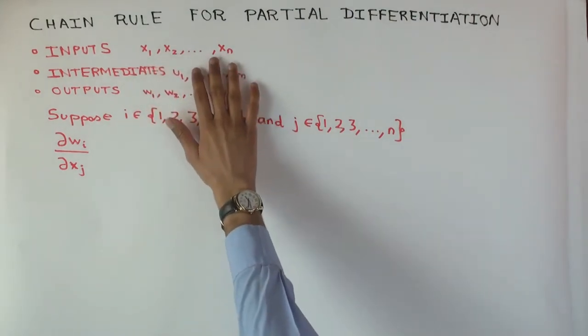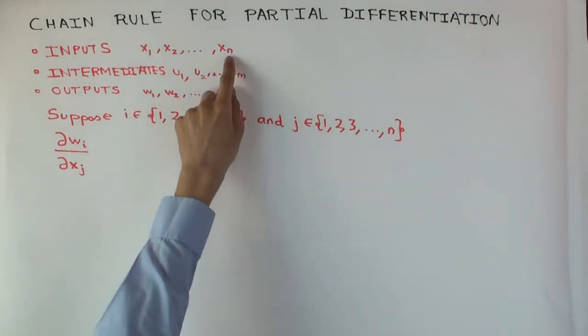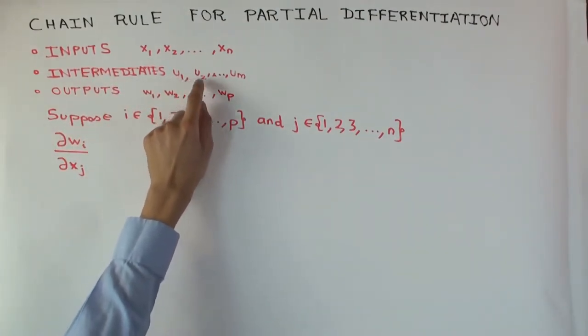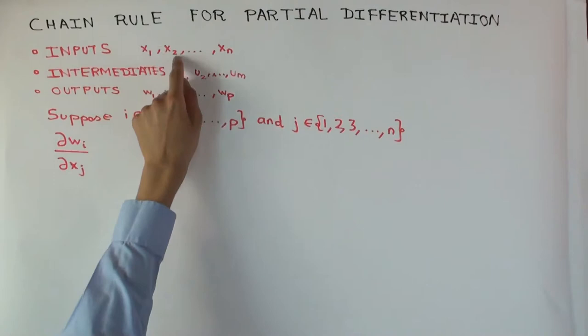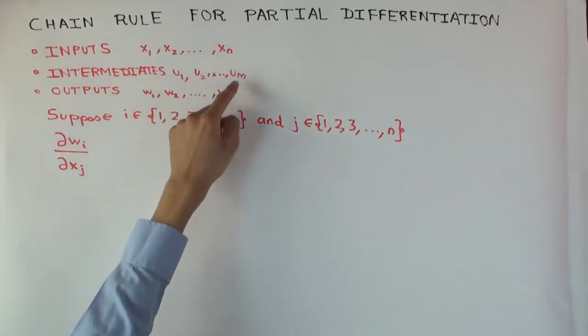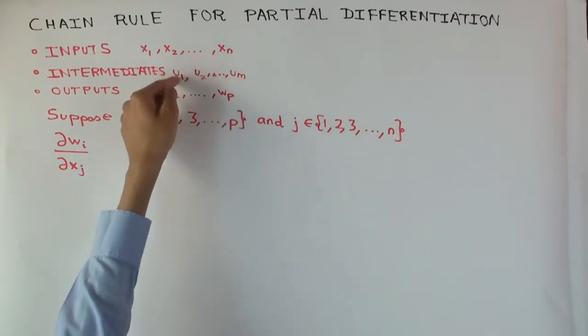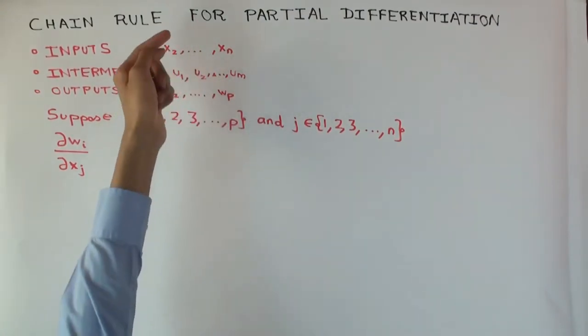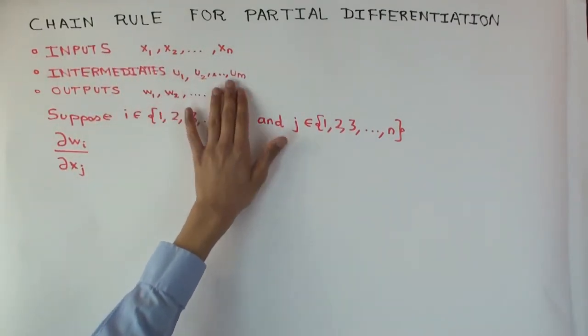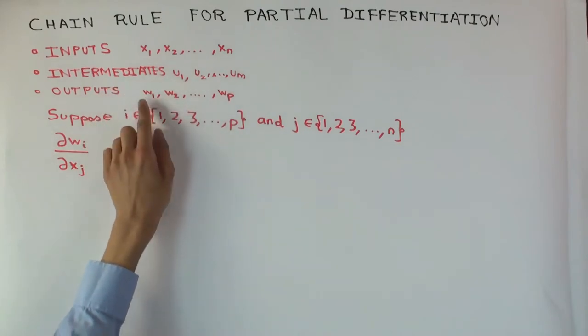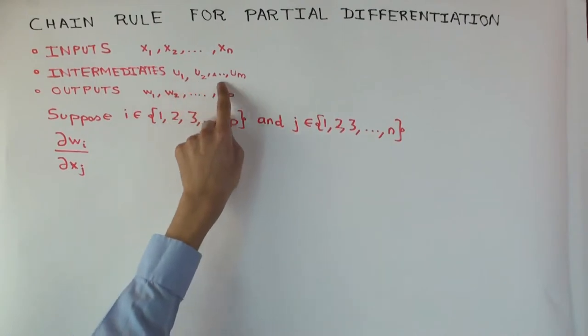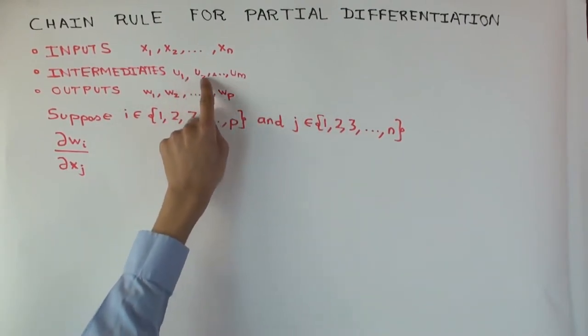So I have a bunch of inputs, n of them, there's all of these, then I have a bunch of intermediate variables. Each of these, u1, u2, um, is a function of the variables x1 to xn. I'll just assume that each one is a function of all of them without loss of generality. And the outputs, w1 to wp, they depend on the intermediate variables.